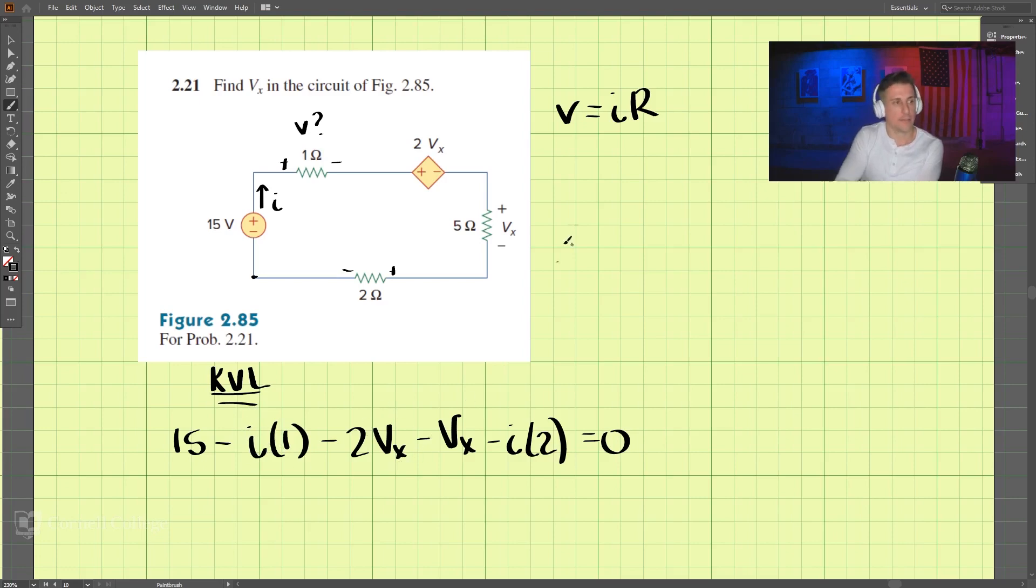But we know Vx here is equal to I times 5, right? I times this 5 here. So Vx equals I times 5. And then I is equal to Vx divided by 5.